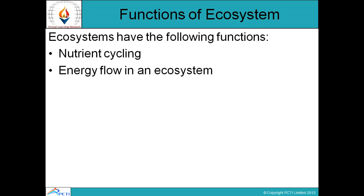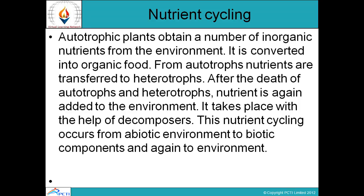The functions of ecosystem include nutrient cycling and energy flow. In nutrient cycling, autotrophs take inorganic nutrients and convert them into organic food. Autotrophs — green plants with chlorophyll — produce their own food. Heterotrophs then consume the organic food produced by autotrophs. Nutrients are then returned to the environment with the help of decomposers. This nutrient cycle occurs from the abiotic environment to the biotic component and back again to abiotic form.